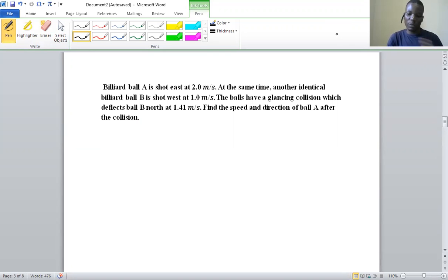We have a linear momentum question on the screen where billiard ball A is shot east at 2.0 m/s. At the same time, another identical billiard ball B is shot west at 1.0 m/s.